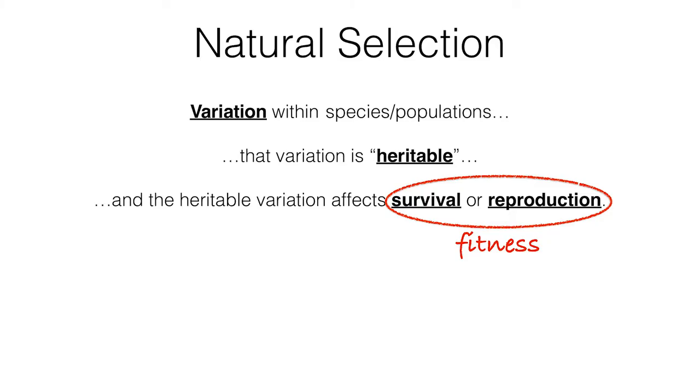This idea of survival and reproduction we refer to as fitness. So we need to have variation within a species, that variation has to be genetically determined, and we need that variation to have effects on the organism's ability to survive and reproduce. That's the core concept of natural selection, illustrated by Darwin and studied by biologists for over a hundred years.